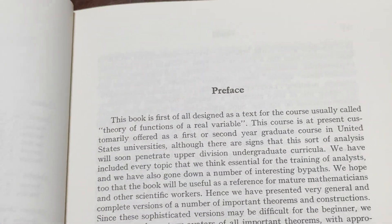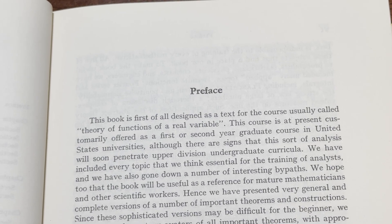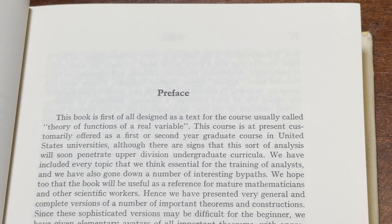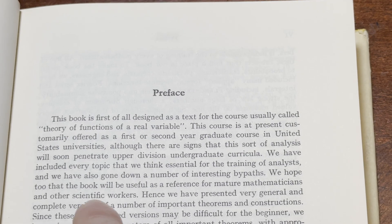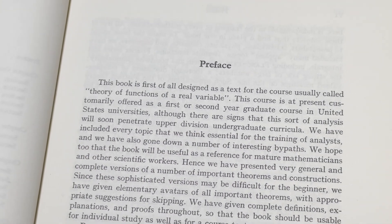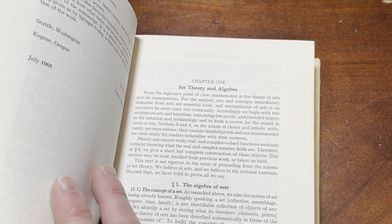The preface does indicate it is intended for a graduate course. Let me show you: 'This book is first of all designed as a text for the first course. The course is usually called theory of functions of a real variable. This course is at present customarily offered as a first or second year graduate course in United States universities, although there are signs that this sort of analysis will soon penetrate upper division undergraduate curricula.' You could in theory do some of these topics as an undergrad.